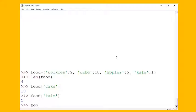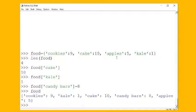I could say candy bars and I'm gonna say that they're given a rank of 8. And so if I look at food, I can see that candy bars have indeed been added, the key and value pair.